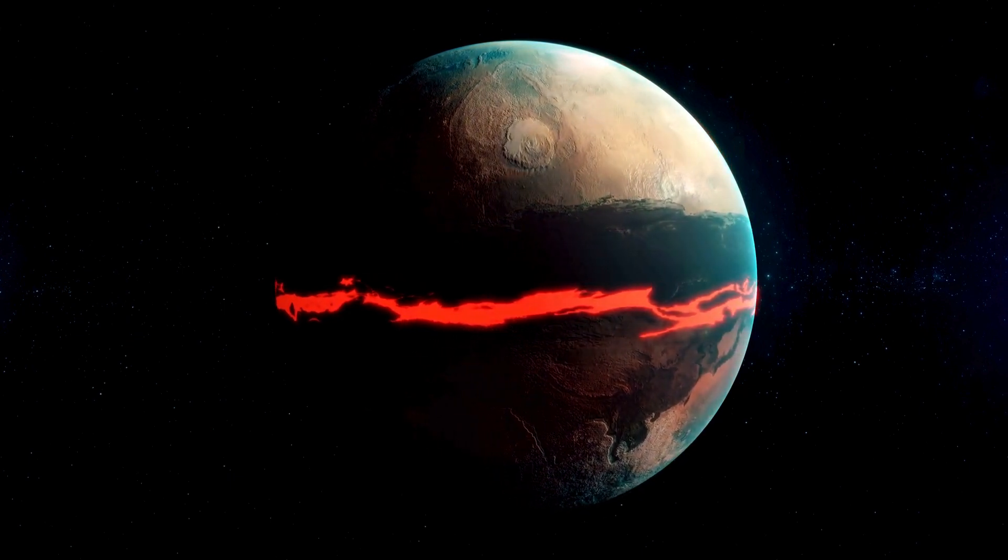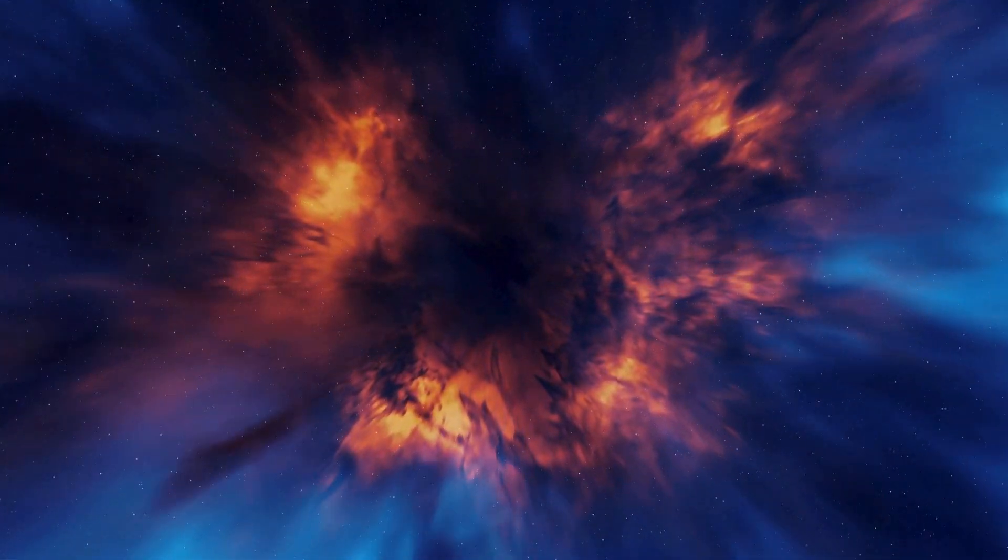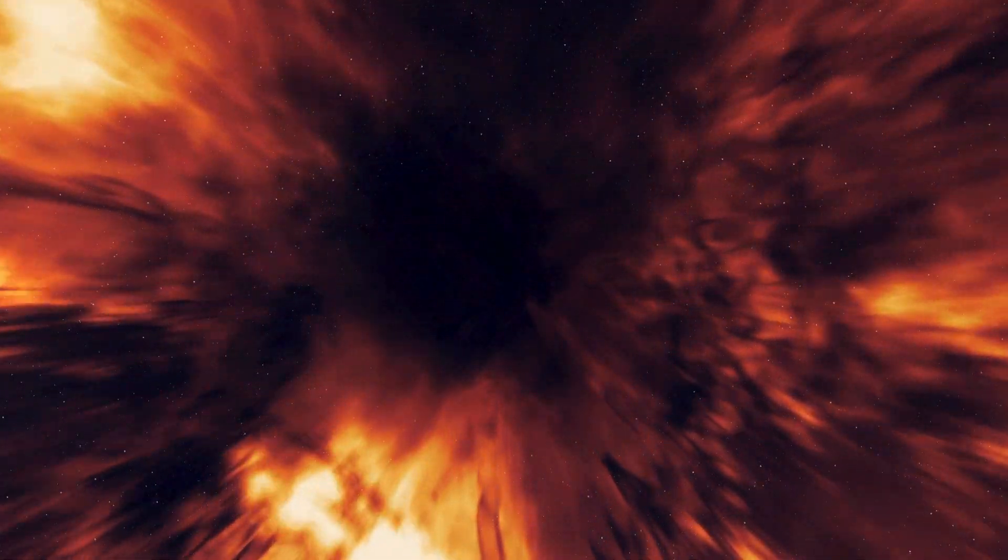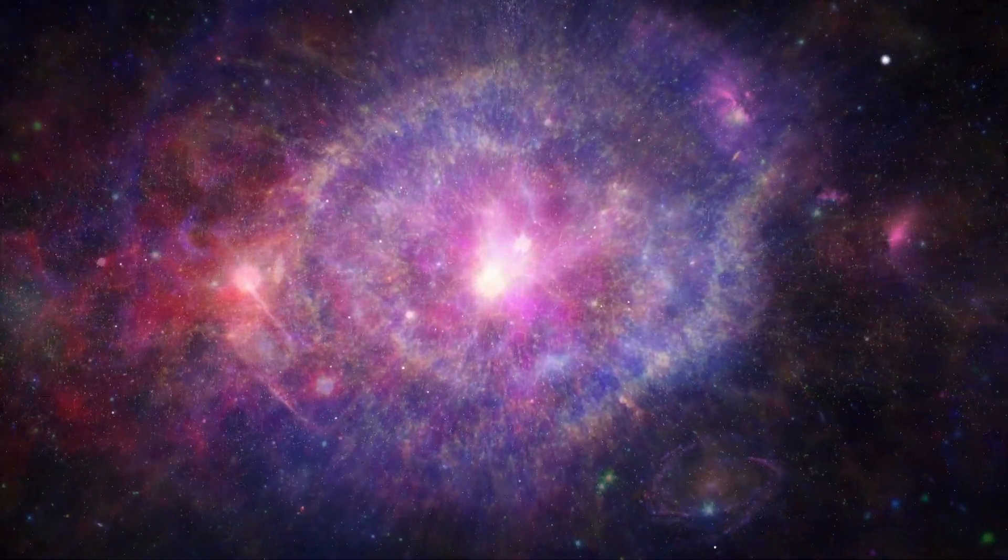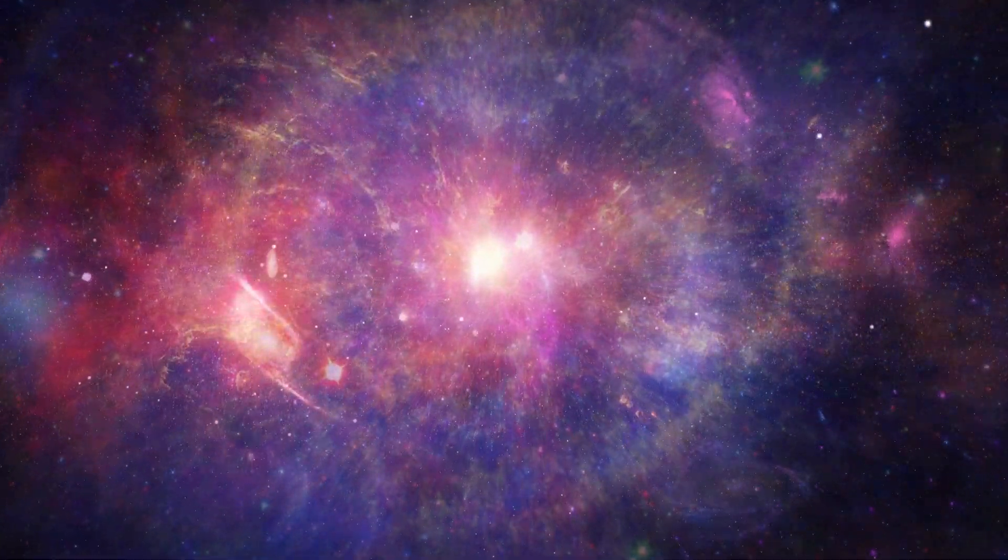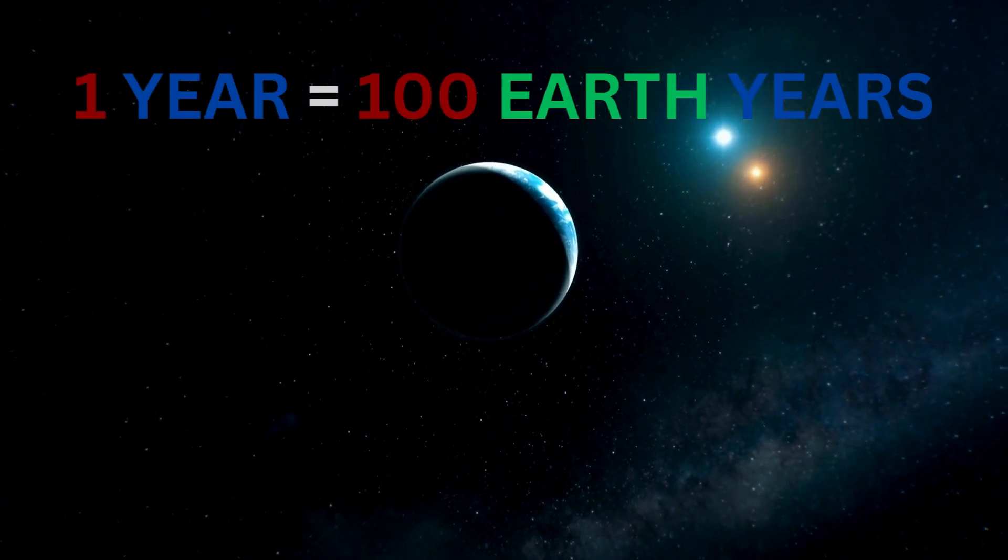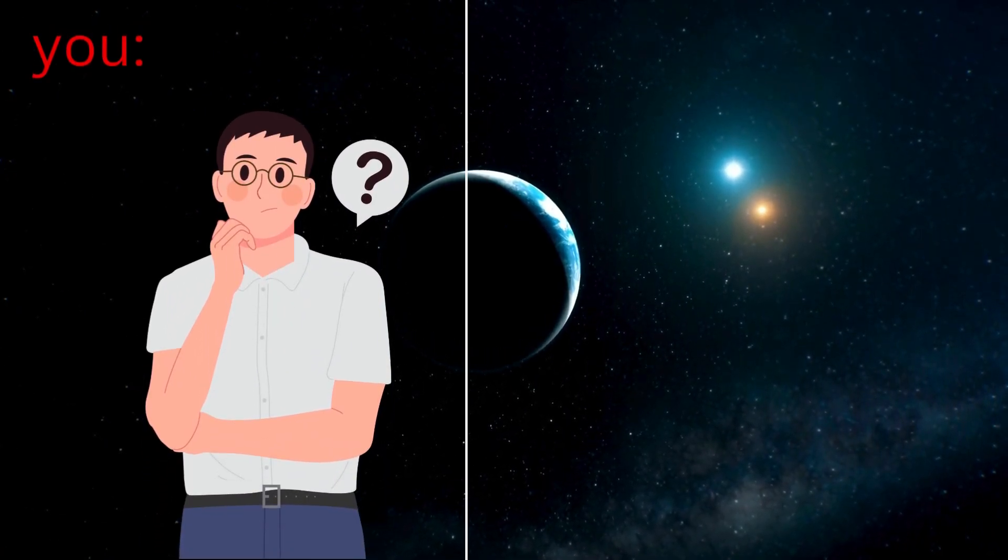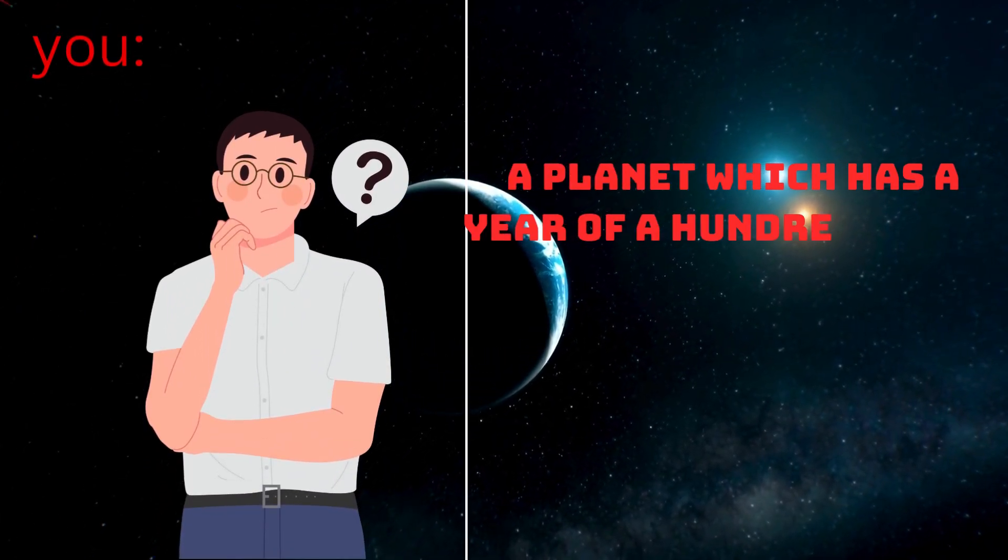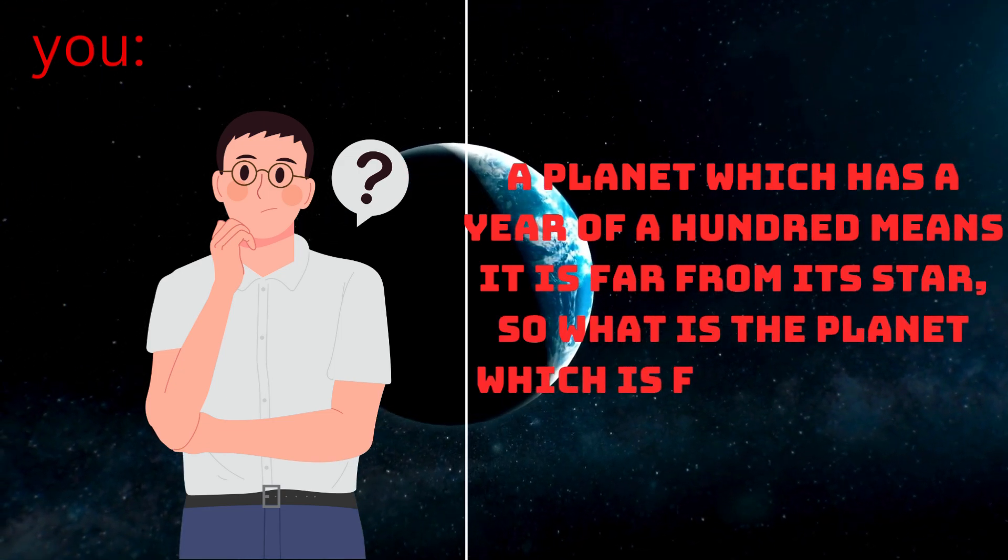Moving on to the oldest known planet in the universe, the oldest planet is located 12,700 light-years away from us and is the oldest exoplanet at 12.7 billion years old, which is only a billion years younger than the universe itself. That itself is insane, but there is something else about this exoplanet that is riveting. A year for this planet is a whopping hundred Earth years. I know what you're thinking. A planet that has a year of 100 Earth years means they're so far from its star, so what's the planet that is farthest from its host star?